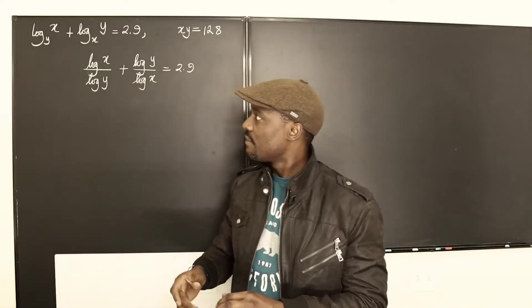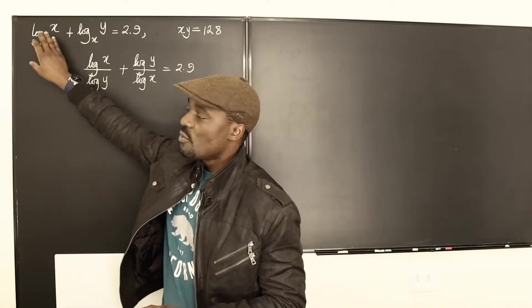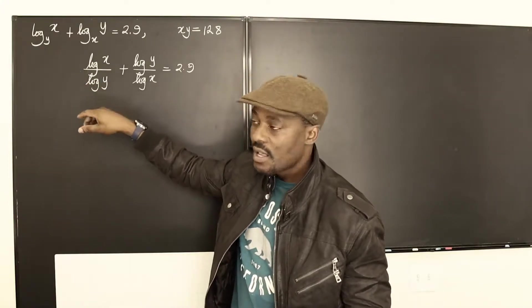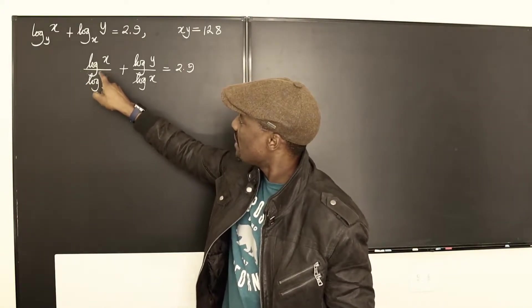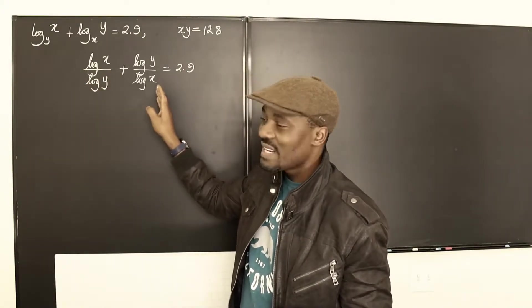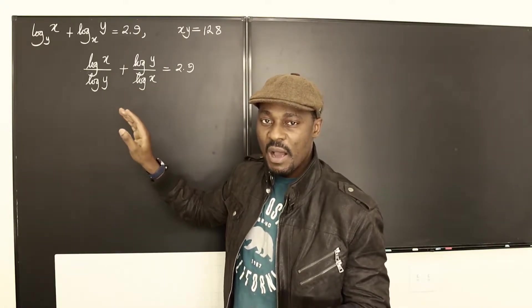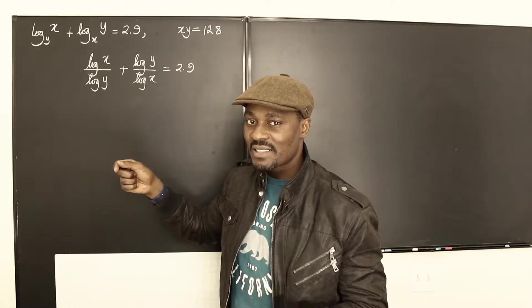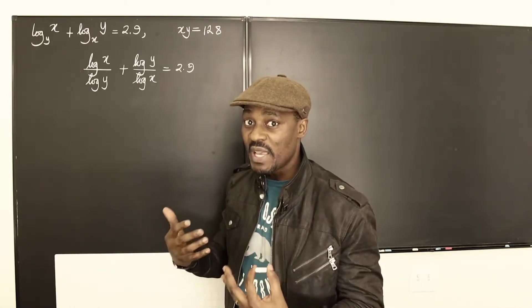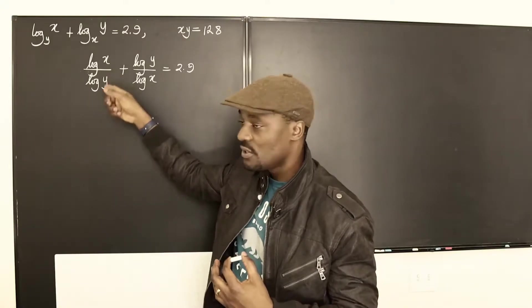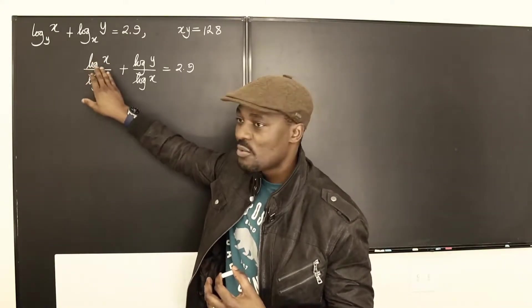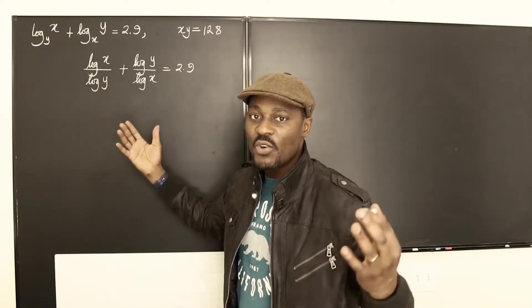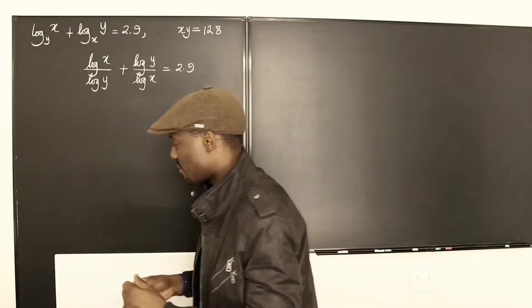So now that I have actually rewritten this like this, the common base at this point is base 10, but base 10 is not helping me. I'm going to change the base now to base x or base y, but I'm going to choose base x. You could choose either of these two. That way, you're going to get rid of one of these letters and you have something to work with. Let's see how that goes.